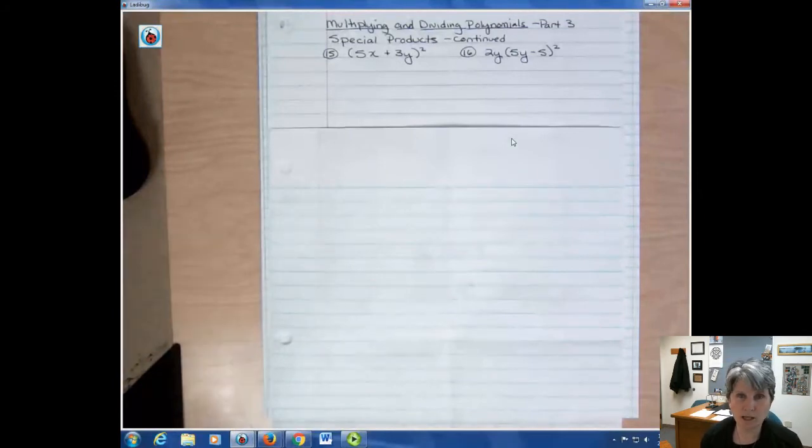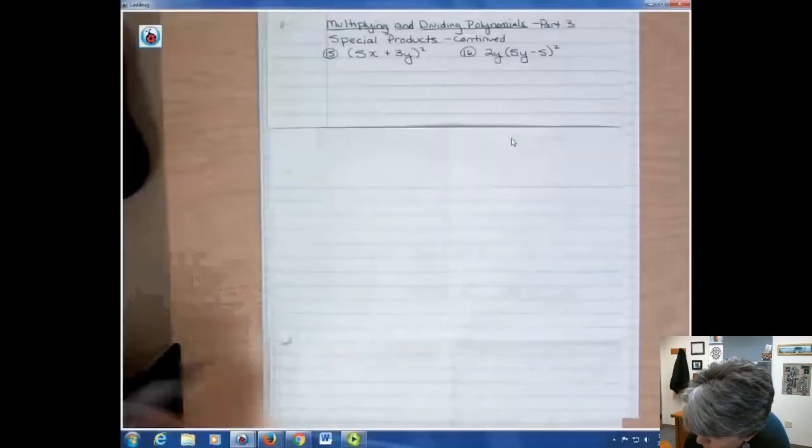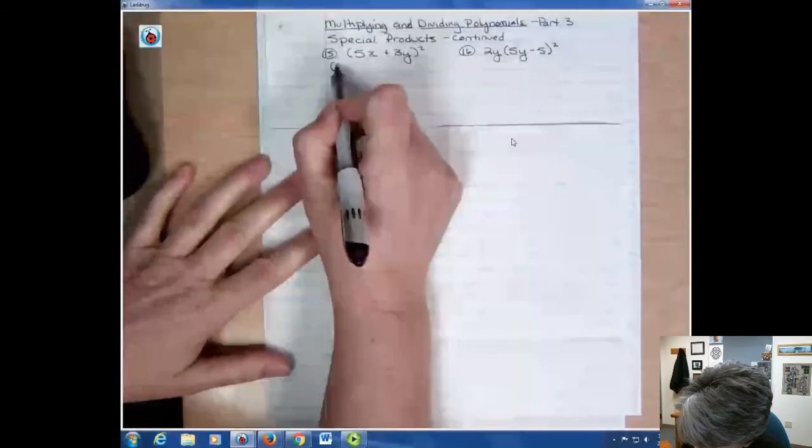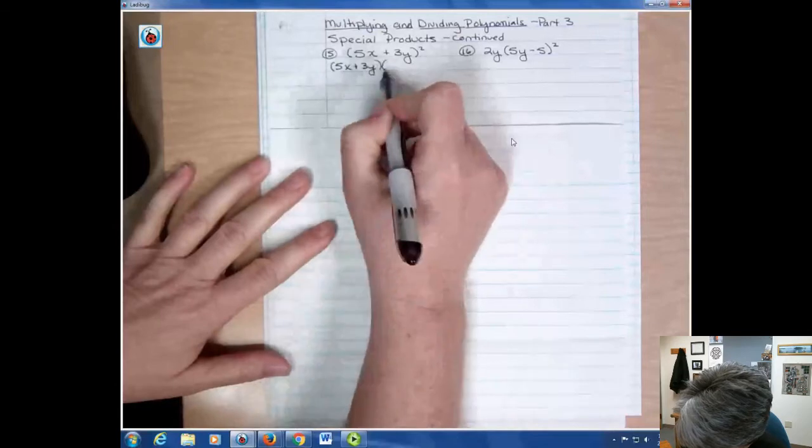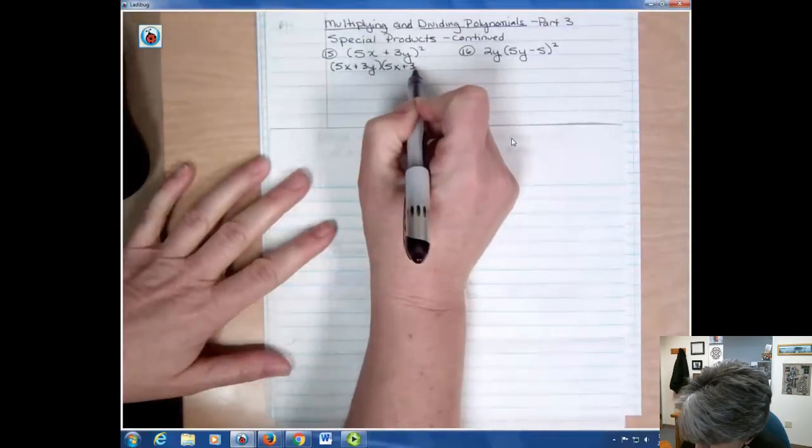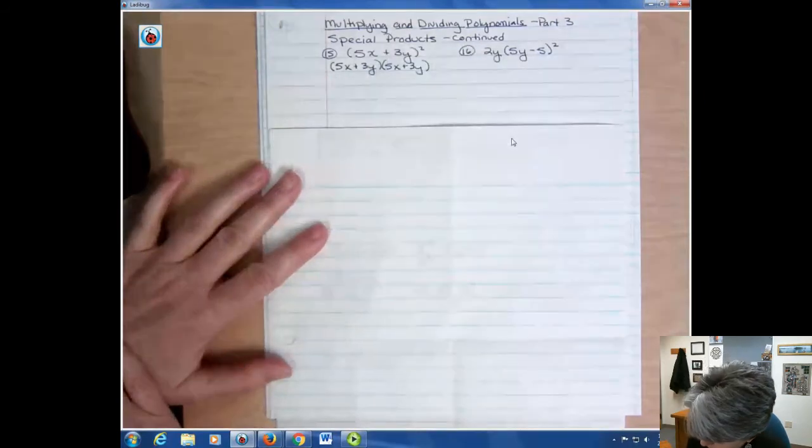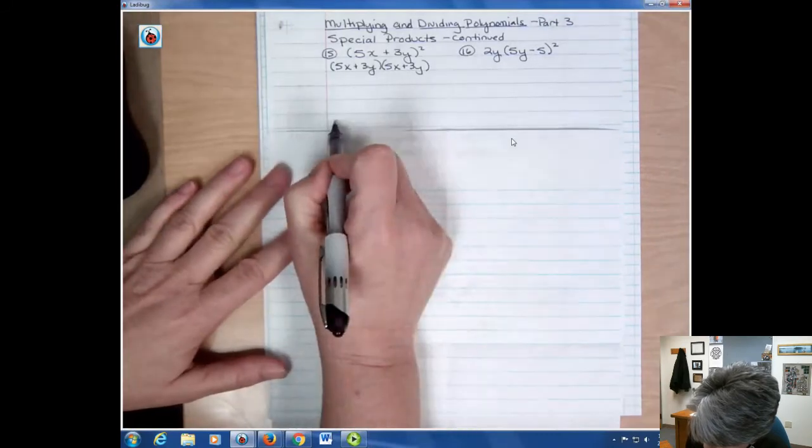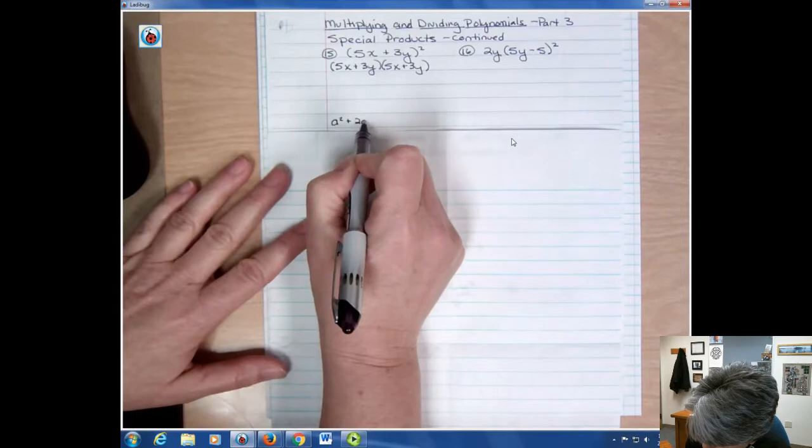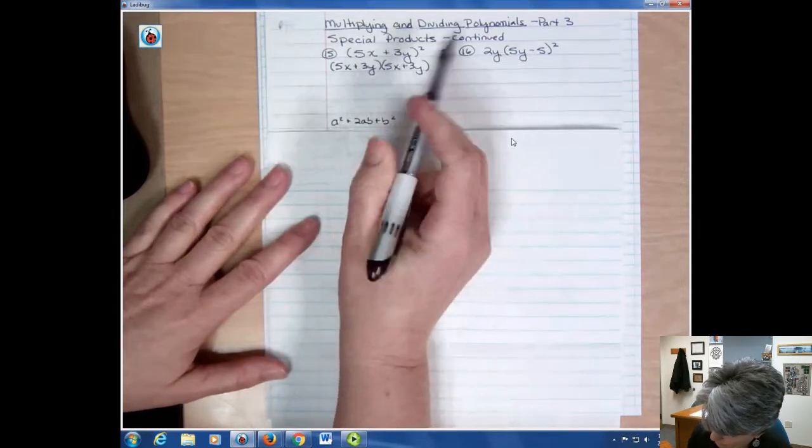So the special products I wanted to do one more of those that had more than one variable in it. The thing that I mentioned before is you can use the shortcut or you could rewrite your second power problem and just write it out and use the foil. So either one works for you. The rule was that it's going to be a squared plus 2ab plus b squared. So I can use that shortcut or I could foil it.